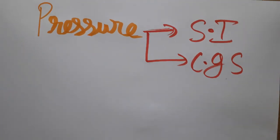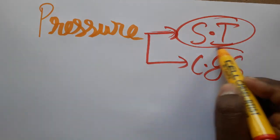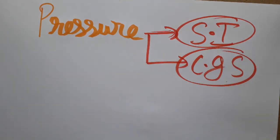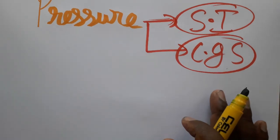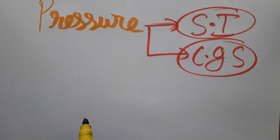In this video we are going to see pressure units in two systems: one is the SI system and another one is the CGS system. The SI system follows MKS units — meter, kilogram, second — while the CGS system follows centimeter, gram, second. First, we should know what pressure is.